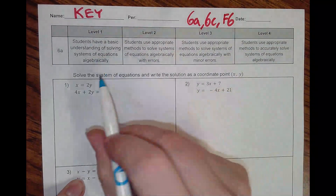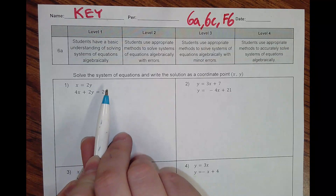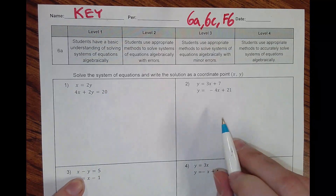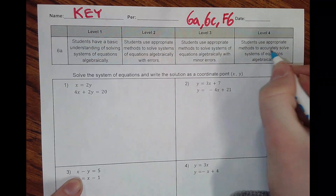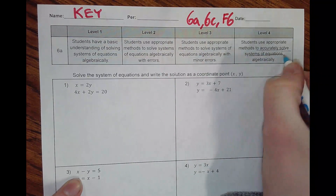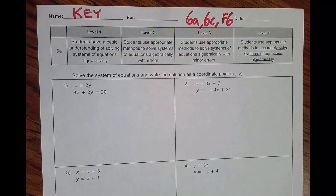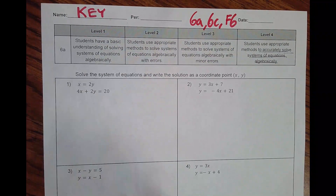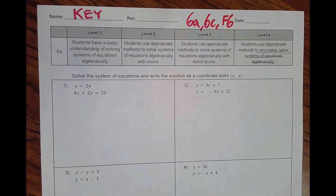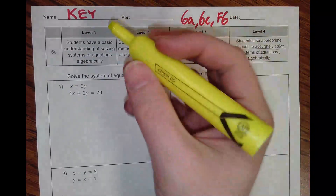For standard 6a, it's asking us to solve a system of equations. There are going to be multiple methods that we have to do. So to get a 4, you must actually solve a system of equations algebraically using your preferred method. When I solve this equation, know that this is not the only method. You could manipulate these equations and do another method, but I'm going to share one method per problem — the method that might be more obvious.